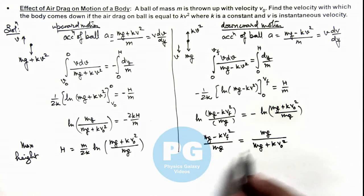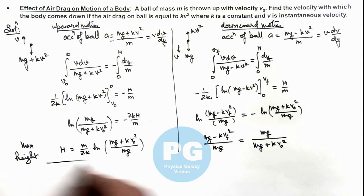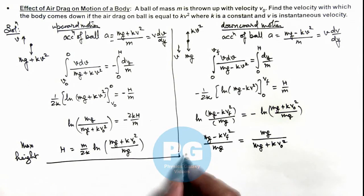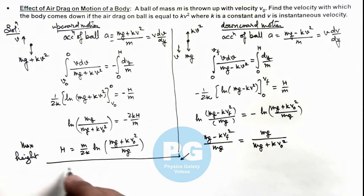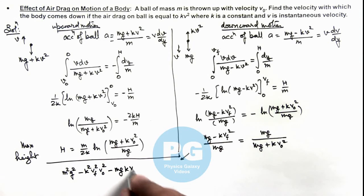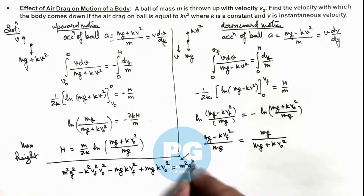I can continue, and this will give us mg minus kv_f² v₀² minus k²v_f² minus mgkv_f² plus mgkv₀² is equal to m²g² which gets cancelled out on the two sides. And here if we simplify, we are getting the value of v_final.